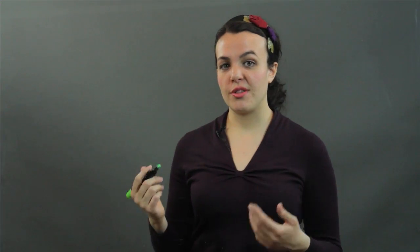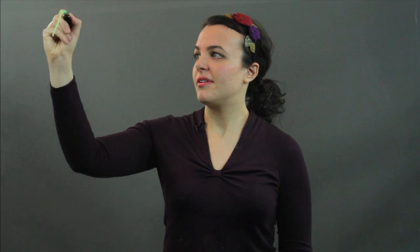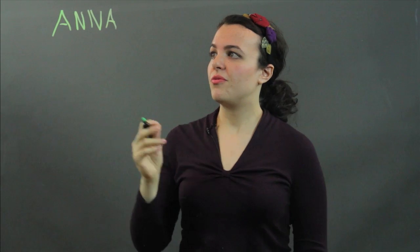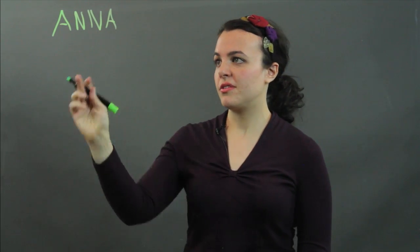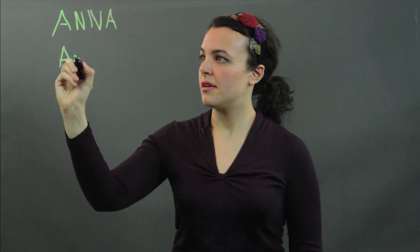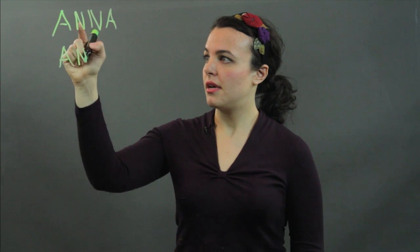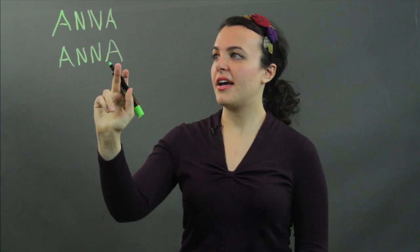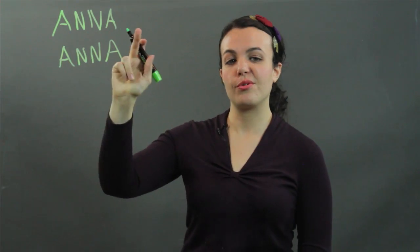For example, let's try the word Anna, or the name Anna. If we were to spell Anna backwards, we start with A, N, N, and A, and we get Anna, same as when we wrote it forwards.